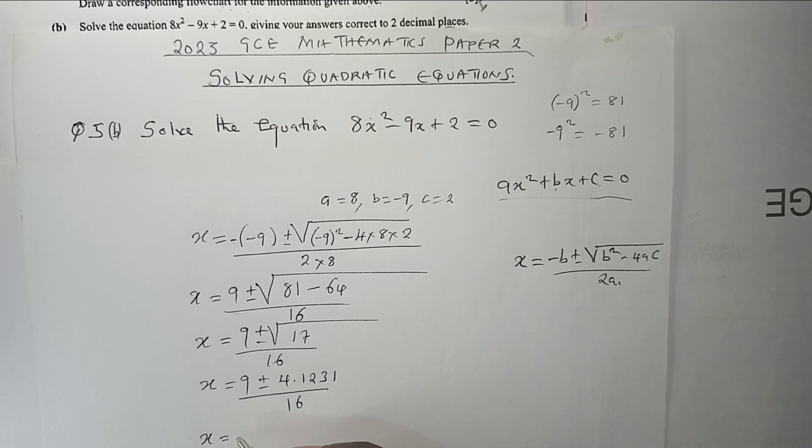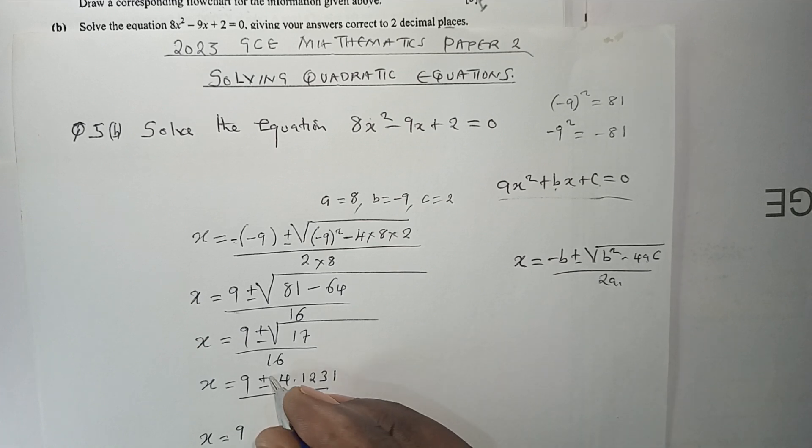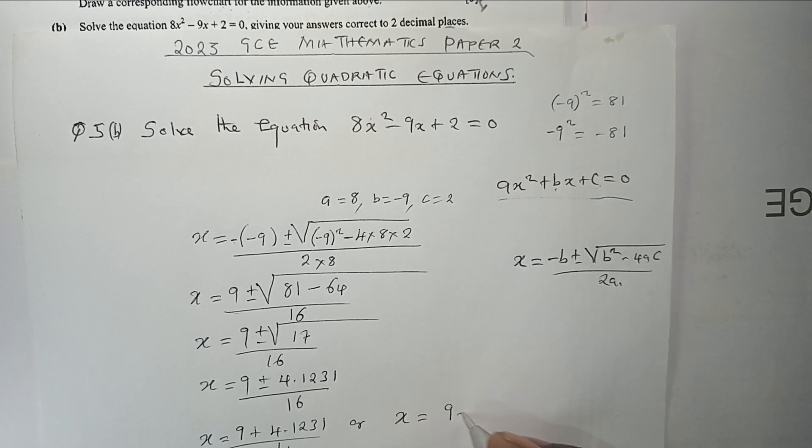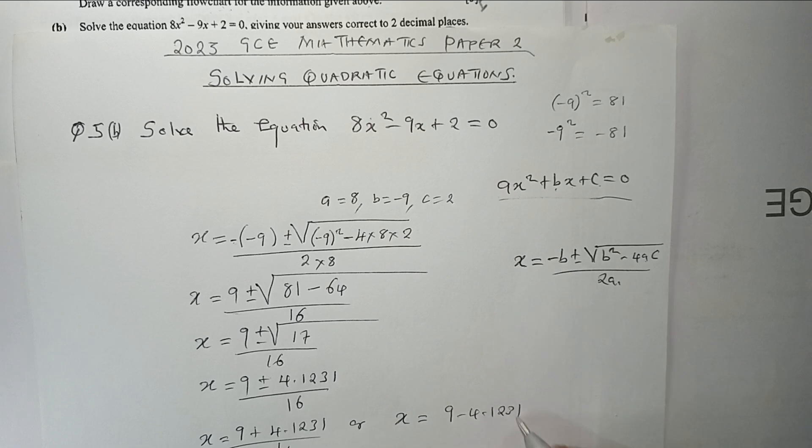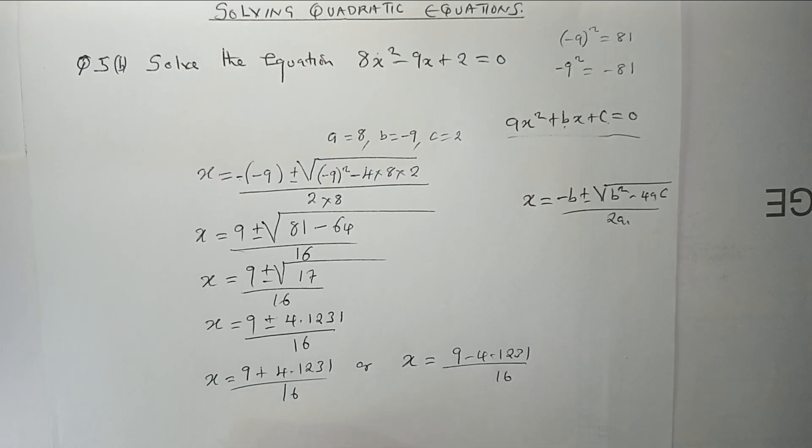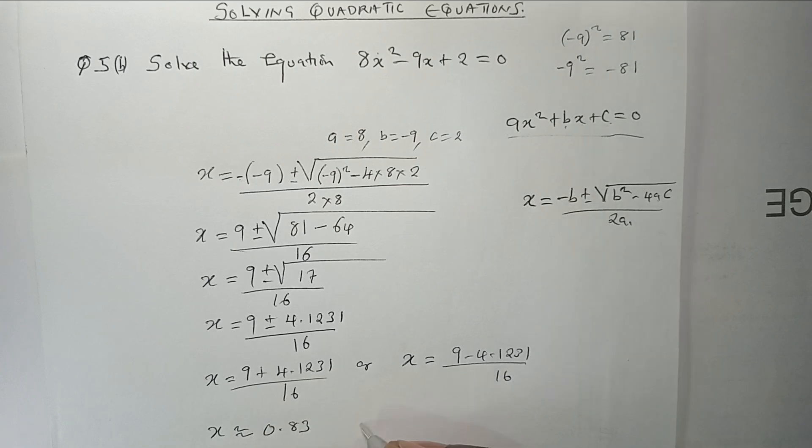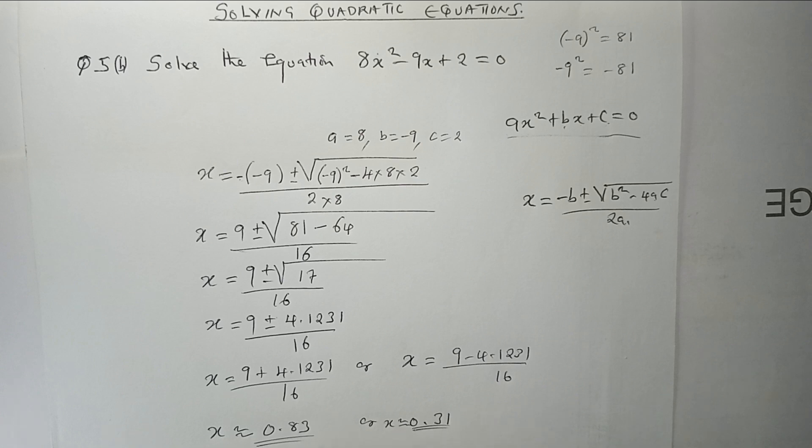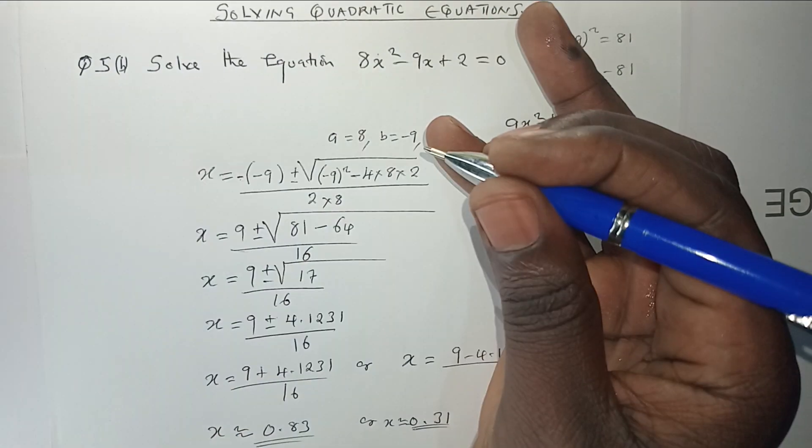So x is equal to 9. We split the two parts because there is positive and negative. So we are going to have plus 4.1231 divided by 16, or x is equal to 9 minus 4.1231 divided by 16. From there, I hope you are able to see. We are going to have x is equal to approximately... So now I'm rounding off. The value of x is going to be 0.83 or 0.31. This is approximation because we have already rounded off to the given condition, which is to two decimal places.